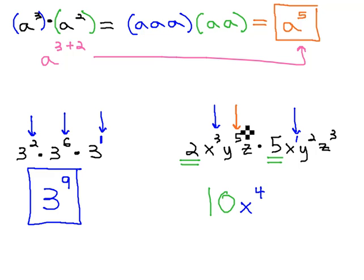Similarly, on the y's, we have y to the fifth and a y squared. Total multiplied together, 5 plus 2, are 7 y's. So we have y to the seventh.